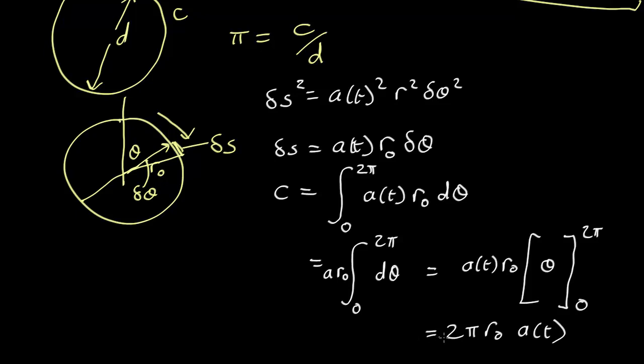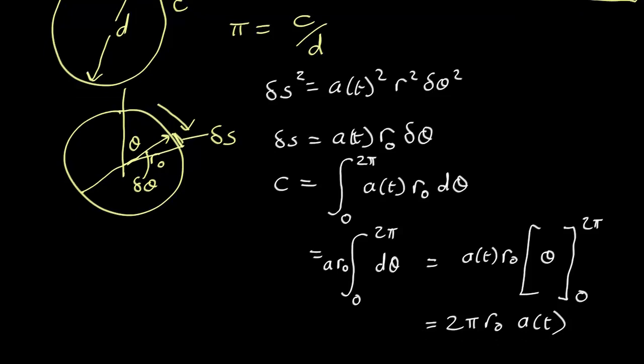Which is just 2 pi r naught A of t. So that's about what you expect the circumference of a circle to be, 2 pi r naught just with a A of t factored in there because the universe presumably has expanded or shrunk at some point. Okay, pretty easy.